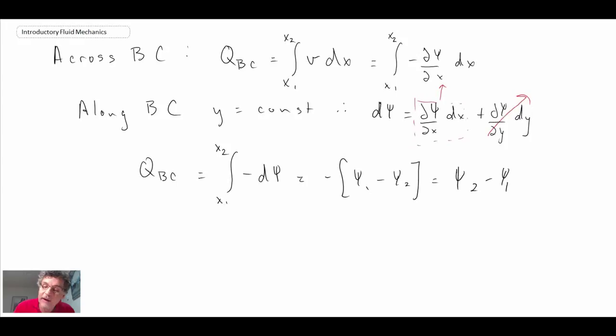If we look back, that is exactly what we got between A and B. Therefore, we can write QAB equals QBC.